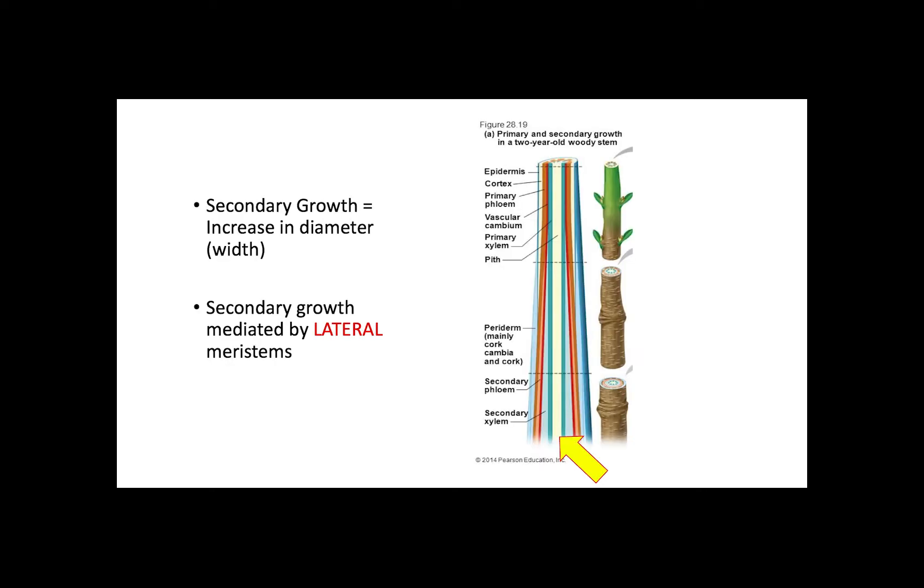Secondary growth in plants corresponds to an increase in diameter. Contrary to primary growth, secondary growth is mediated by lateral meristems.